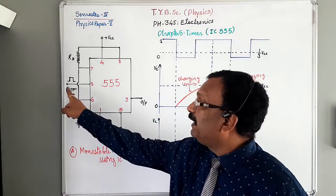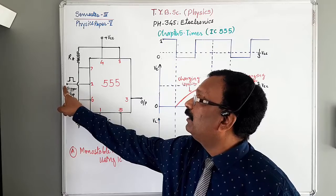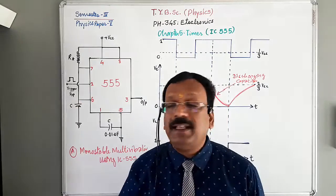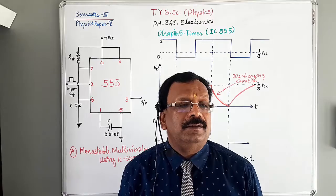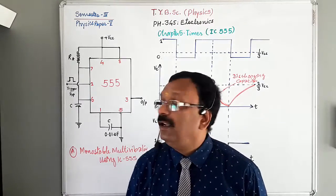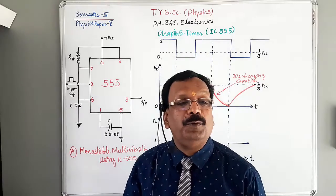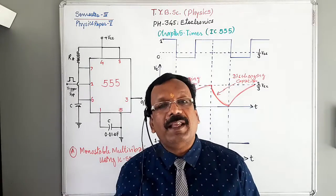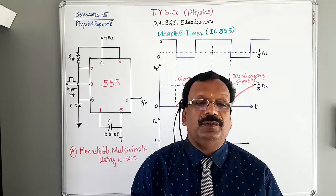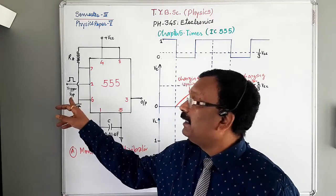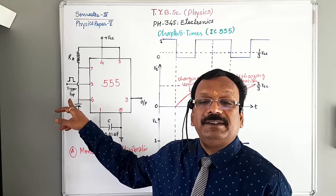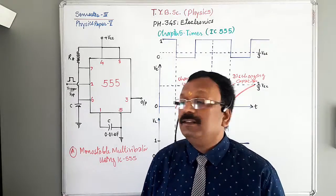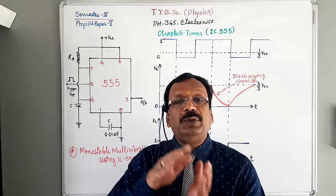When the circuit is triggered by a trigger input connected at pin 2 of the IC — the trigger input is an external pulse — the output of the monostable multivibrator changes from low to high or from high to low.